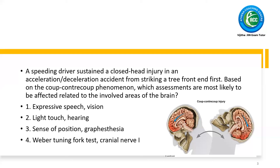In this closed head injury, the frontal lobe and occipital lobe are affected. The correct answer is expressive speech and vision. The frontal area is responsible for cognitive and intellectual function. There is a speech center in the frontal lobe called Broca's area — B-R-O-C-A-S — so Broca's area in the frontal lobe governs speech. The first option, expressive speech and vision, is the answer.